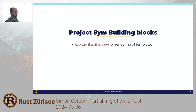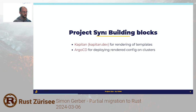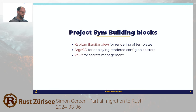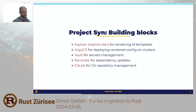Kapitan, which used to be somewhere in the Google organization but isn't anymore, is a Python tool used to render templates in different languages. Argo CD, you might be familiar with — we use this to deploy stuff on our clusters. HashiCorp Vault is our choice for self-hosted secrets management. Renovate for dependency updates of all kinds of things. And finally GitLab for the Git repository management.